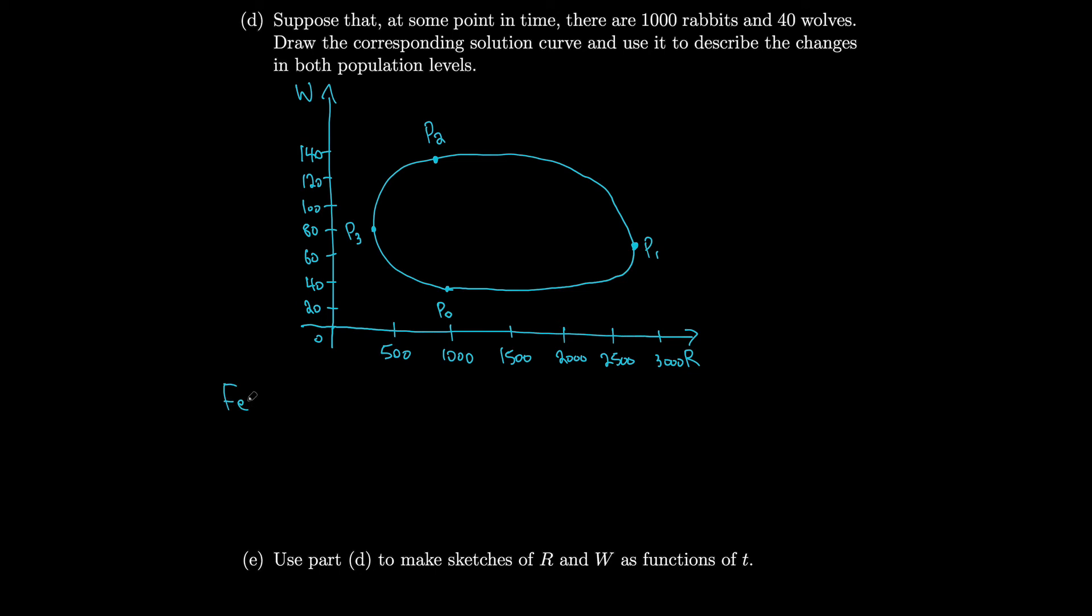To summarize this, we could say that there are a few wolves at P0, so the rabbits increase until P1 as the wolves increase. Then the wolves increase until P2. So then at P2, we see that the rabbits start to decrease. At P3 is when they start increasing again. So rabbits increase at P3, and our cycle repeats.